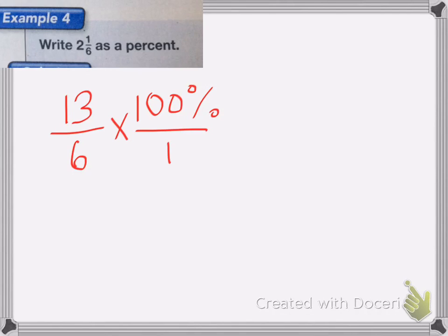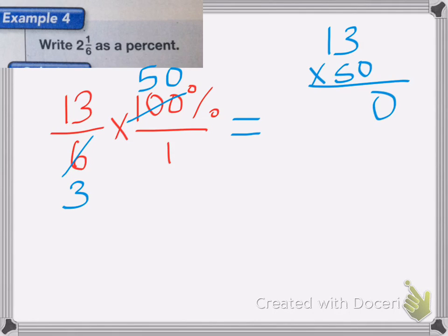And I'm going to reduce it. I know that 2 goes both into 6 and into 100. So 6 becomes a 3, and the 100 becomes a 50. Now multiply it across. So I get 13 times 50, which is equal to 13 times 50. 5 times 3 is 15, carry the 1. 5 times 1 is 5, plus 1 is 6. So I end up with 650% divided by 3.